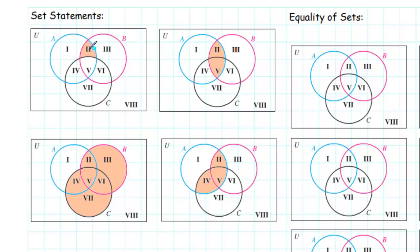We see that region 2 is inside of circle A and inside of circle B, but it is not inside of circle C. So the way that we could write this would be A intersect B intersect C complement. It represents the set of women that are actresses and ballerinas, but are not comedians.